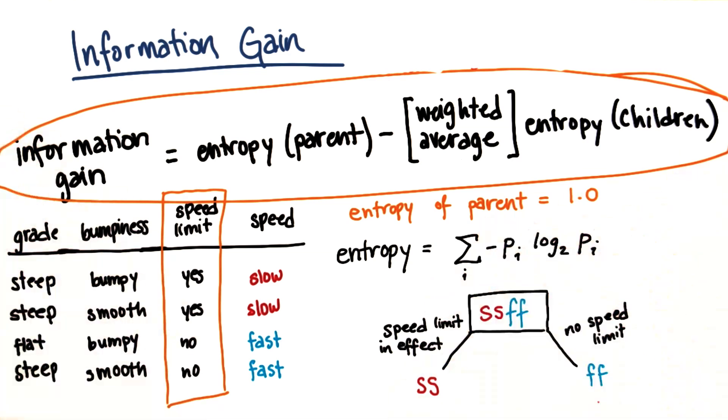So this has just been a very simple calculation. It still took us a while to get through. But I hope you have a little bit of a better sense for what information gain is in decision trees and why it's so important.